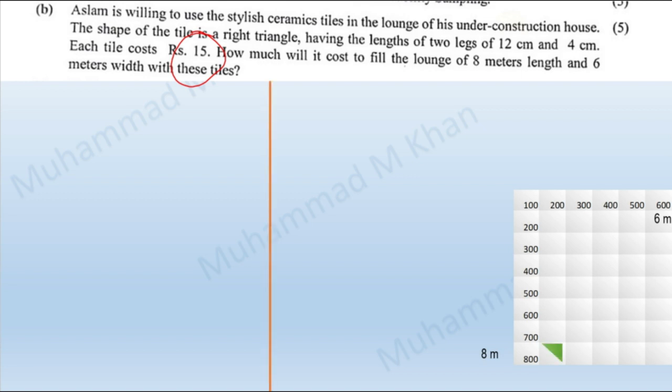Since the lounge will be filled by placing tiles in pairs, as shown in the figure, the number of tiles required would be the area of the lounge divided by the area of each tile.